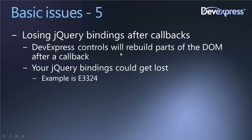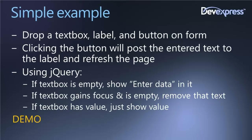So there are the five basic issues that we identified — there are probably others as well, but those are the real elementary ones that everybody's going to hit at some point. Let me show a quick simple example that demonstrates some of these problem areas. I'm going to drop a text box, a label, and a button on a form — clicking the button will post the entered text to the label. I'm going to use postback rather than callbacks to keep it simple.